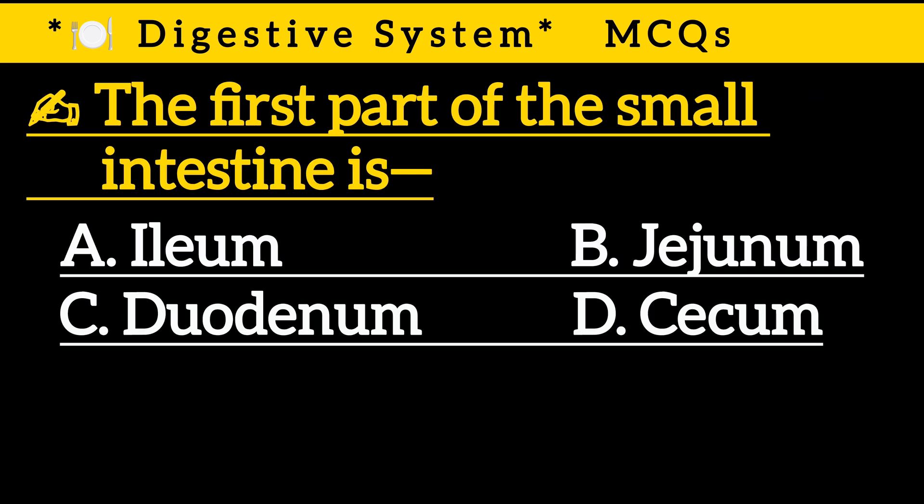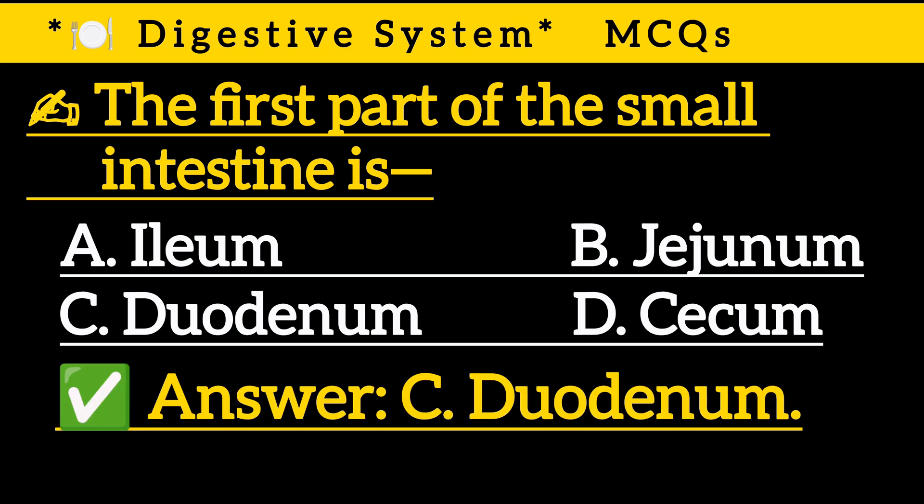Question 13: The first part of the small intestine is — Option A: Ileum, Option B: Jejunum, Option C: Duodenum, Option D: Cecum. Correct answer is Option C: Duodenum.